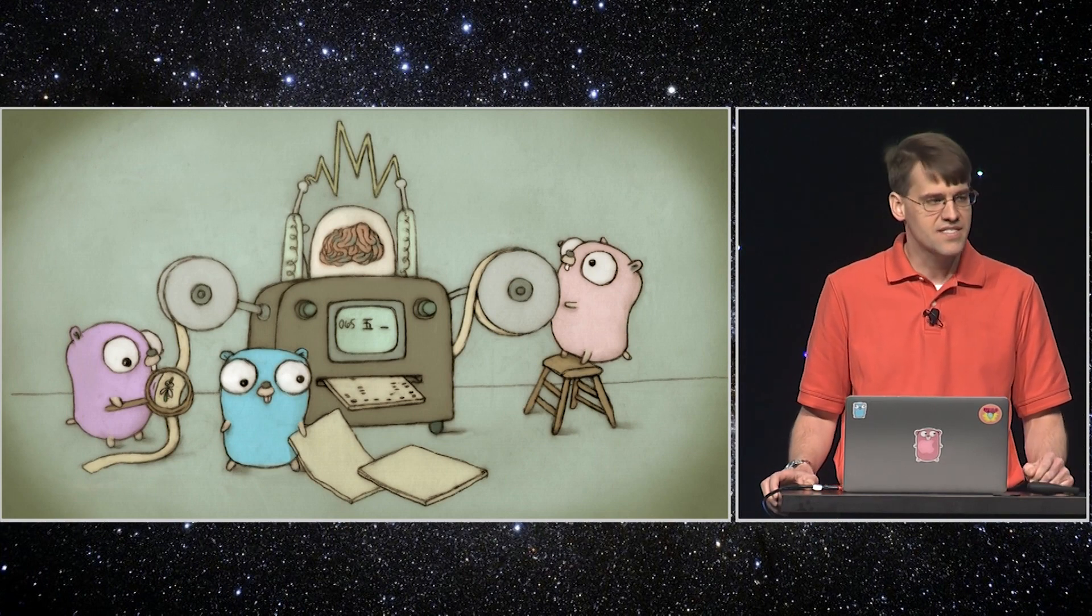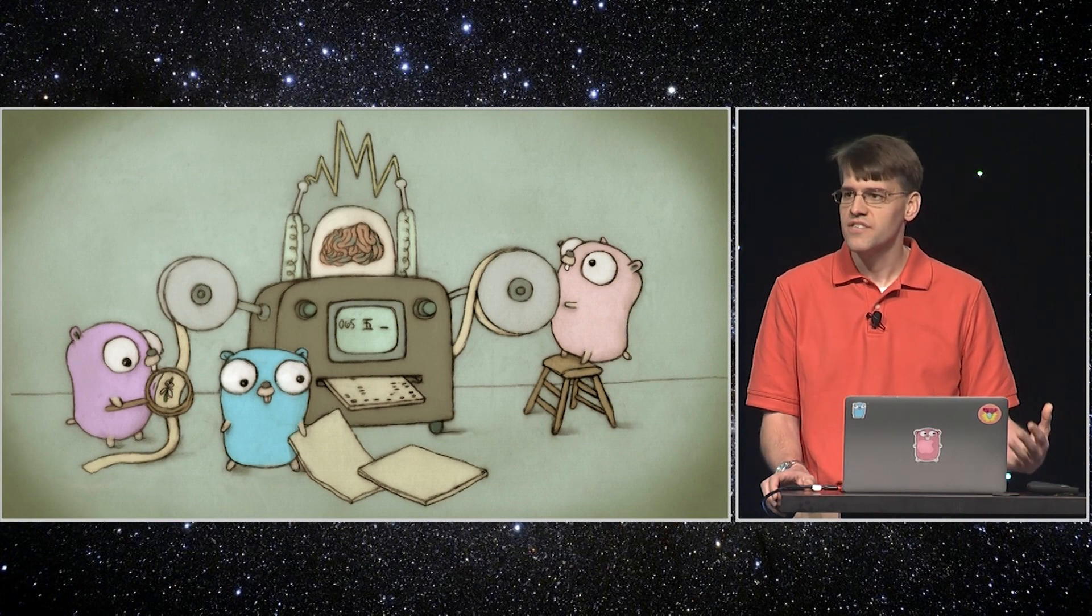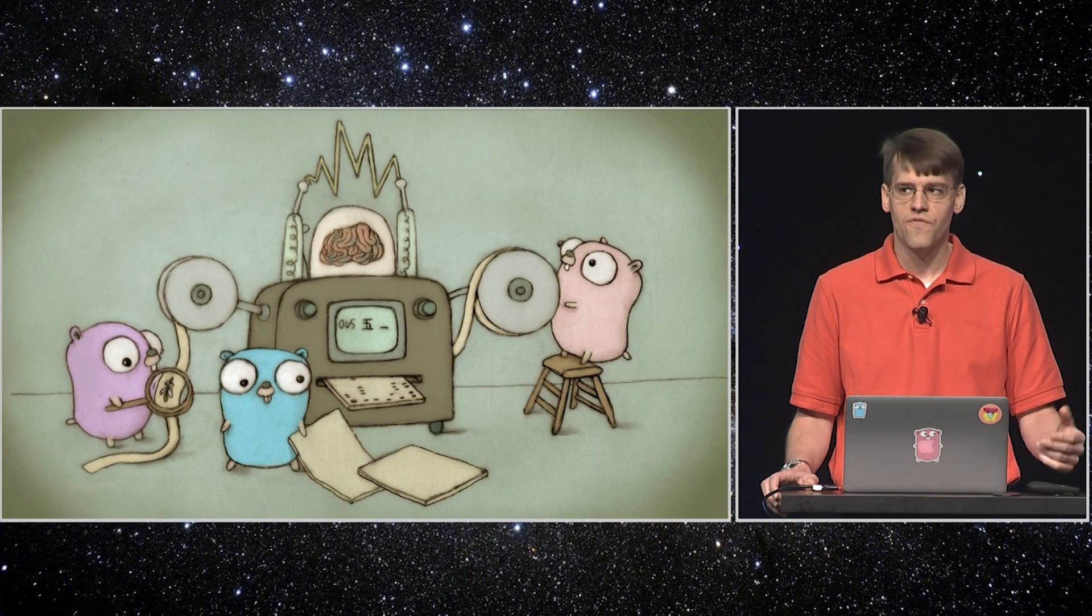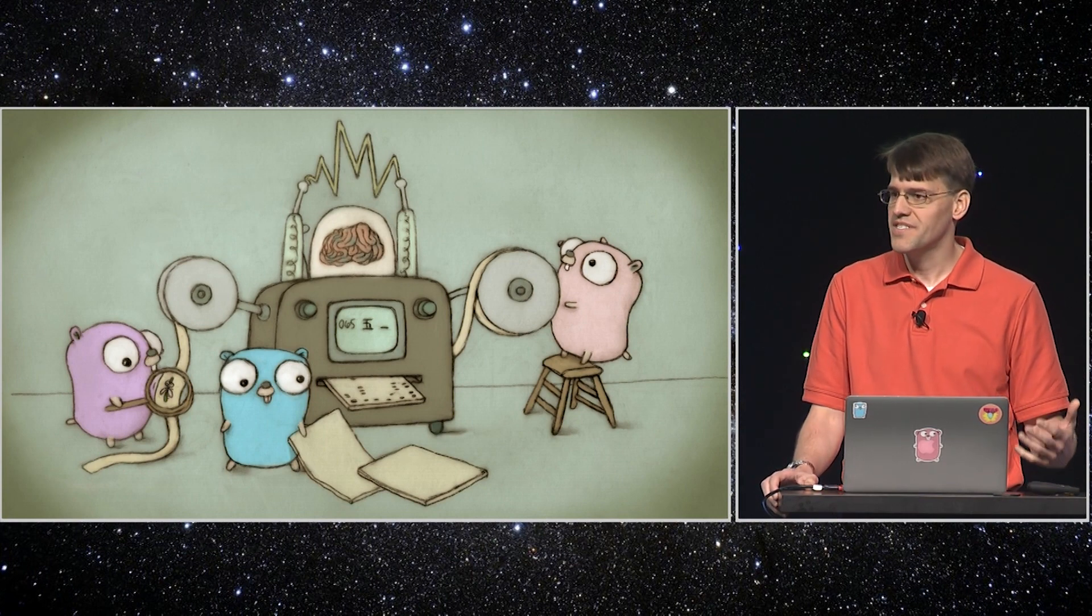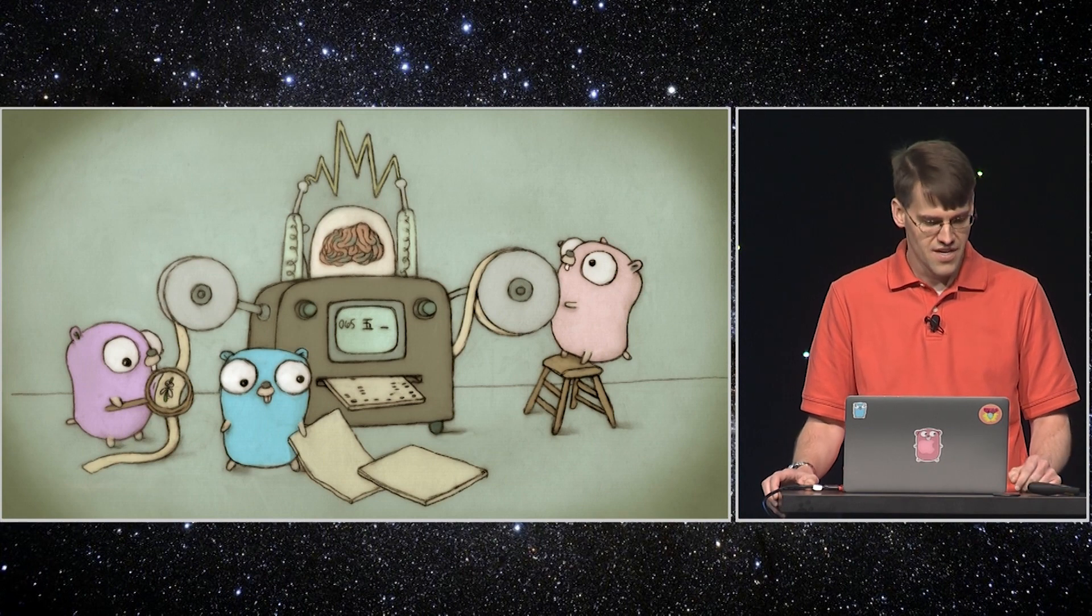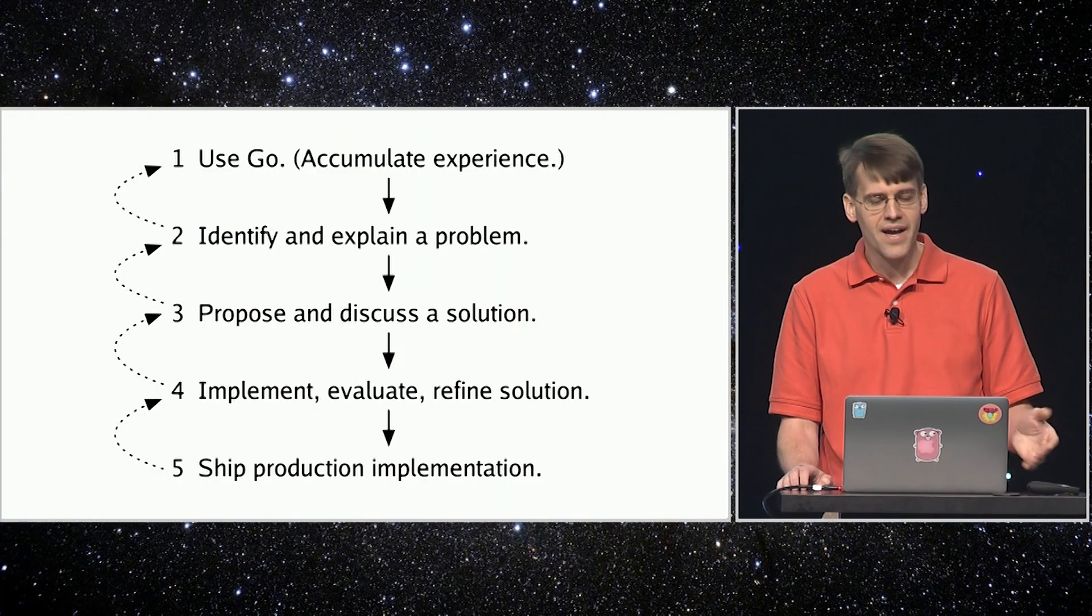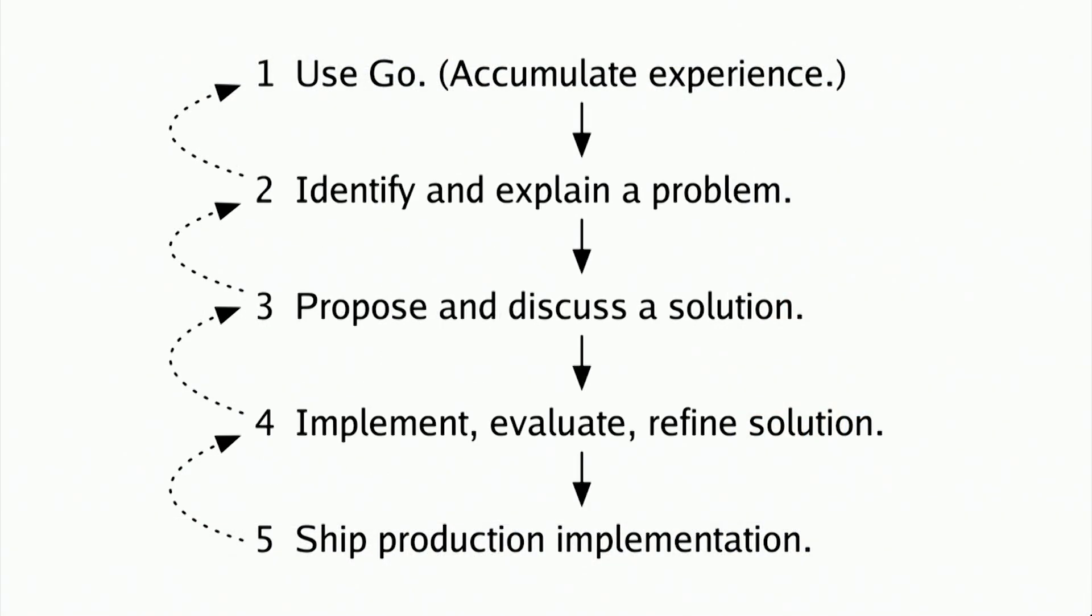That informality obviously doesn't scale to the global Go community of today. Part of the work since the Go open source release has been porting our informal process into the more formal world of mailing lists and issue trackers. But I don't think we've ever explicitly described our process. Looking back, I think this is the basic outline of our work on Go, the process we've been using since the first prototype was running.